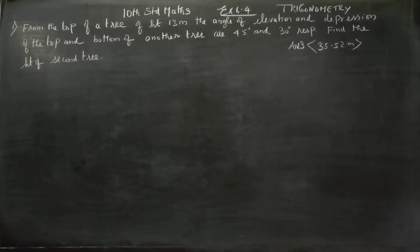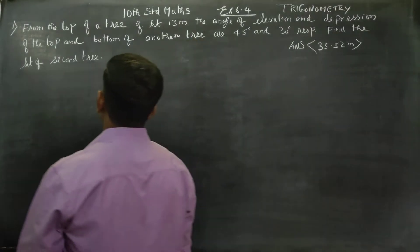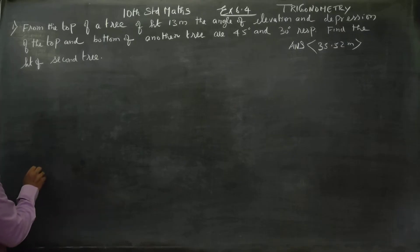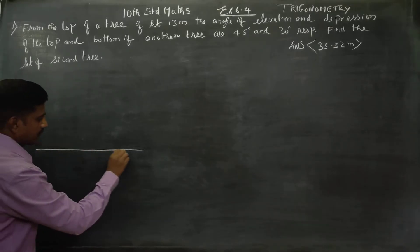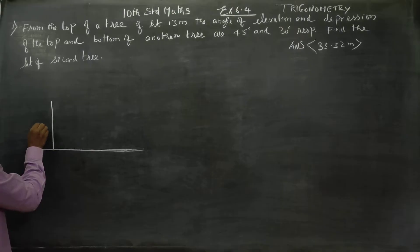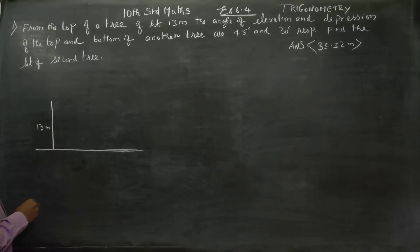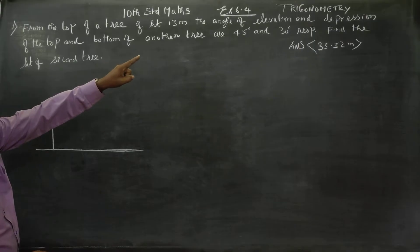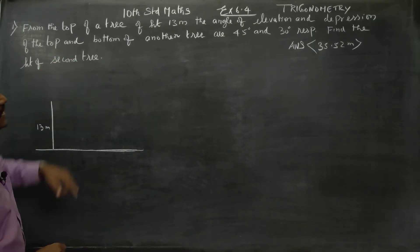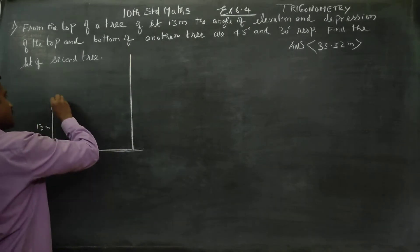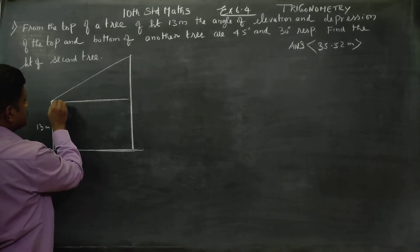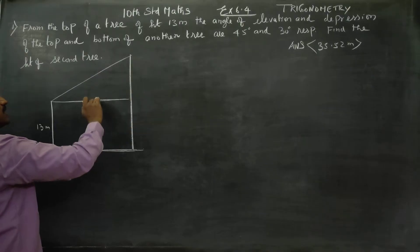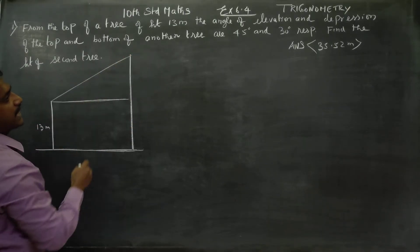Hello students. From the top of a tree of height 13 meters, the angle of elevation and depression of the top and bottom of another tree are given. Here is the first tree of height 13 meters. From its top, we look at the angle of elevation toward the top of a second tree. This is the line of sight. You can see the top of the tree — angle of elevation.